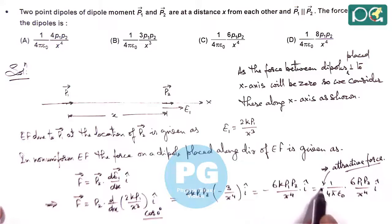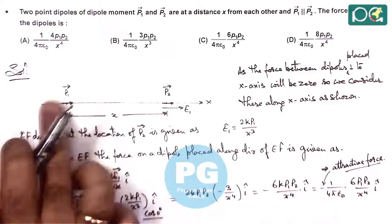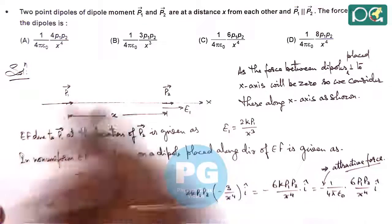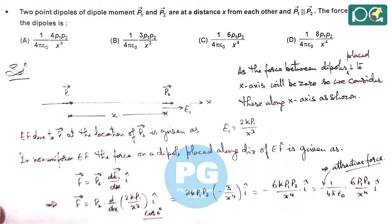We can state this negative sign indicates that p2 is attracted toward p1, because the force is acting in negative x direction. If we just have a look at the magnitude, it matches with option C. So answer in this question will be option C.